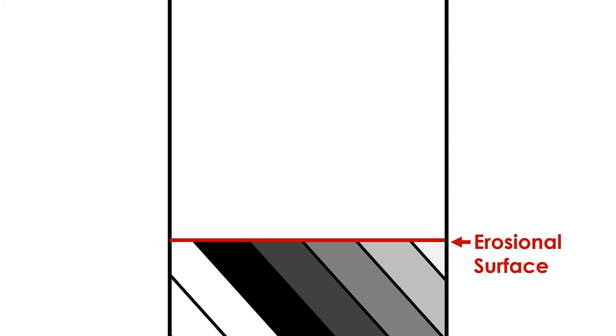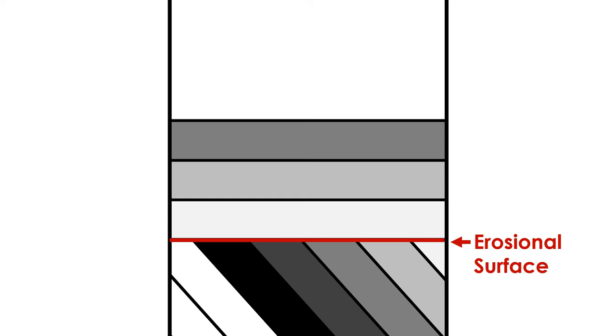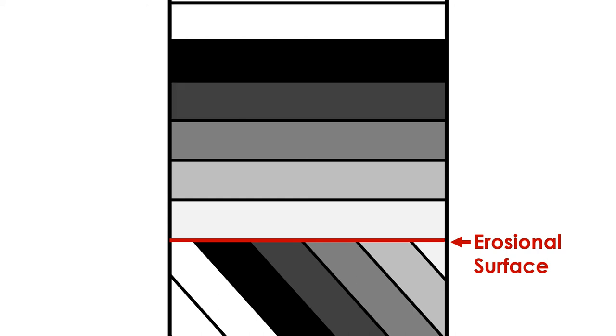Eventually, sedimentation would resume at this location, and sediment would be deposited on top of the erosional surface above the truncated layers. Again, the layers are laid down one after another. Overall, this is the natural process that produces an angular unconformity. It's a long process. It can take tens or hundreds of millions of years, or longer.